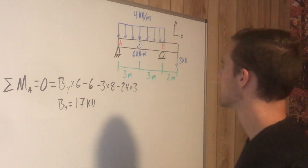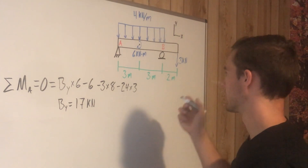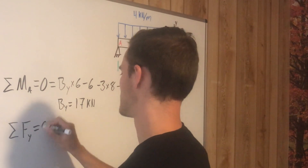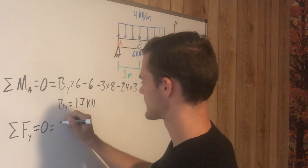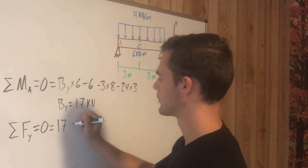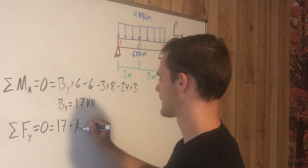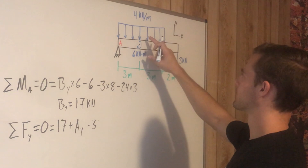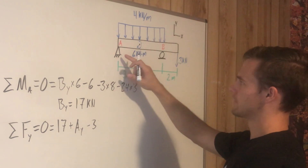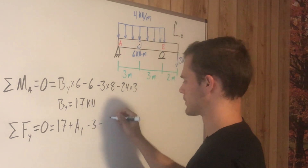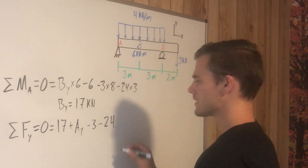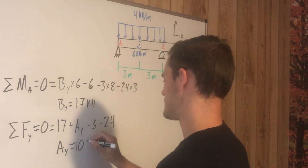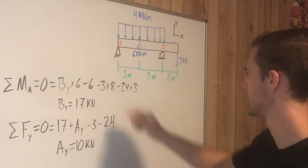We don't need to worry about forces in the x-direction because there are none. Summing forces in the y-direction equals zero: we have B sub y at 17 kilonewtons positive, A sub y assumed pushing up, minus three kilonewtons for the point load, and the distributed load gives 24 kilonewtons pushing downward, so minus 24. Solving gives A sub y equals 10 kilonewtons. Those are the reaction forces at points A and B.